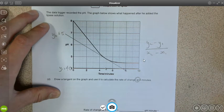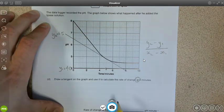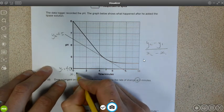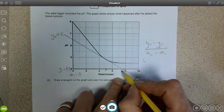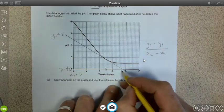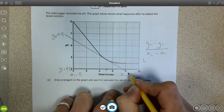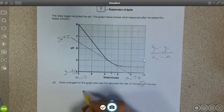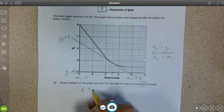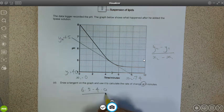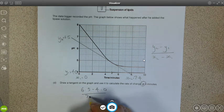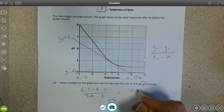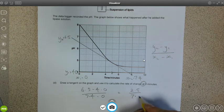So the time on the x-axis, the initial time x1 is 0, and let's say that's 7.4. So the next one is 7.4. So 6.5 minus 4 over 7.4 minus 0, or 2.5 divided by 7.4.